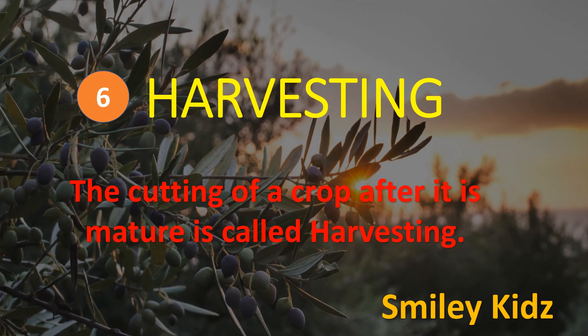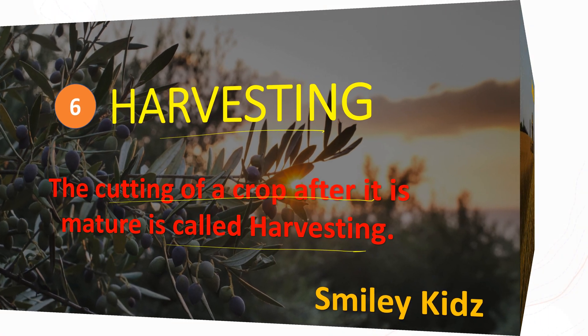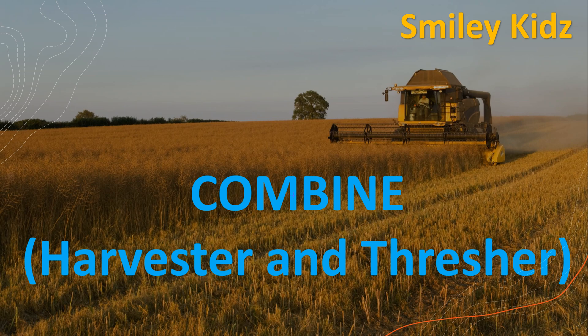Now let's harvest our crop. The cutting of a crop after it is mature is called harvesting, and it is an important task. Harvesting is done either by using a sickle or by a machine called a harvester. After harvesting, the grain seeds need to be separated from the chaff — this process is called threshing, carried out with the help of a machine called a combine, which is both a harvester and a thresher.